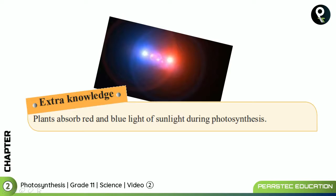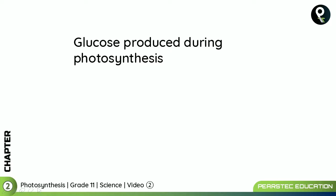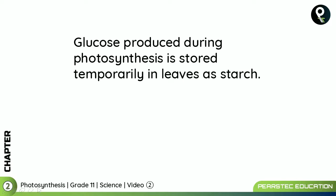Extra knowledge: plants absorb red and blue light of sunlight during photosynthesis. These are the two colors that the plant is absorbing — that's new information!